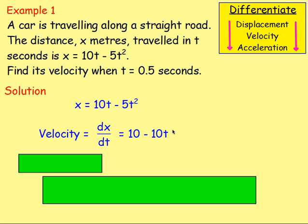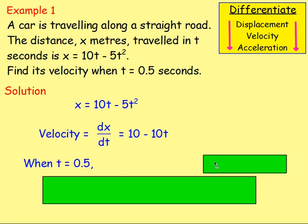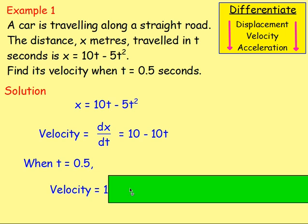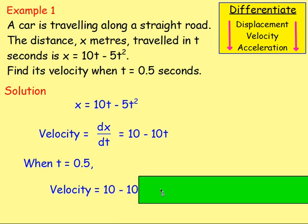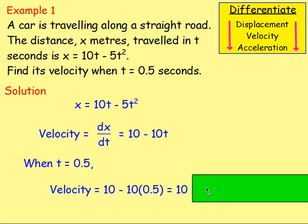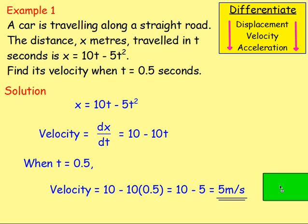However, we are asked to find the velocity when t = 0.5. So when t = 0.5, we replace t with 0.5. The velocity is 10 − 10t, so it's 10 − 10 × 0.5, which is 10 − 5, which is 5 metres per second. That is what you would do for example one.